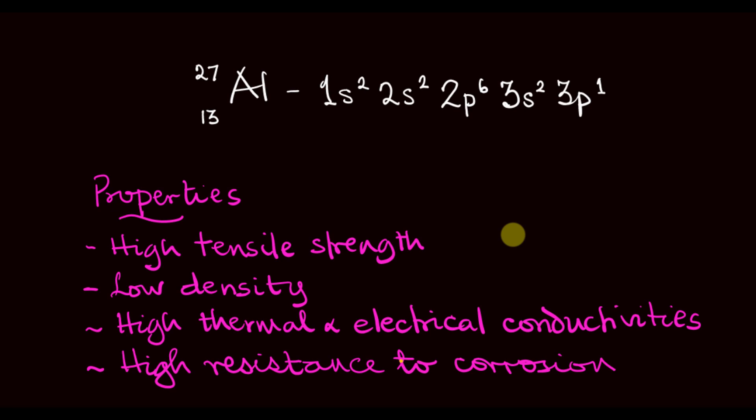Aluminum is a very important metal in the metallurgical industry. It is the 13th element on the periodic table and the third most abundant element on the earth's crust after oxygen and silicon, and it is the most abundant metal in the earth's crust.